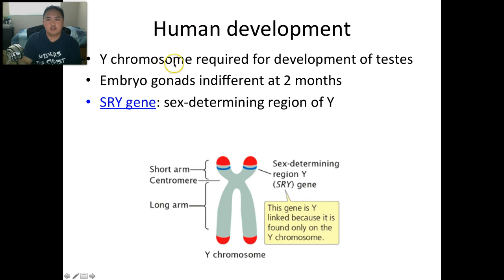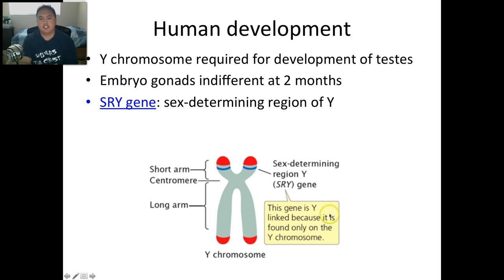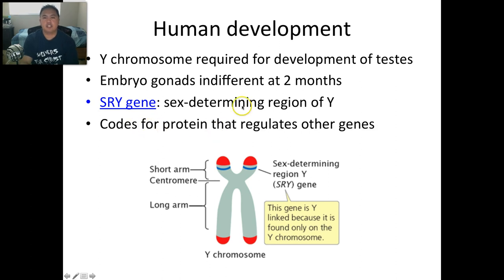The Y chromosome is required for the development of testes. At two months, you can't determine if the fetus is a boy or a girl — the embryonic gonads are the same. The SRY gene helps determine the gender of the baby. It's found only on the Y chromosome and codes for a protein that regulates all the other genes to determine what gender you are.